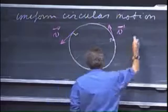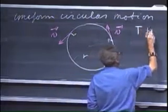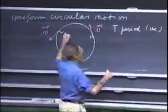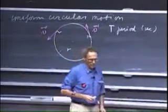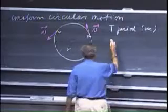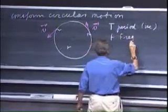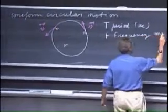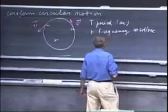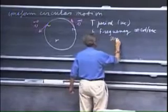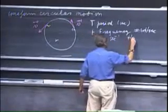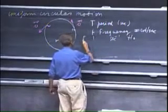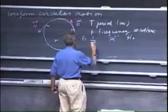We introduce T, what we call the period. Of course, it's in seconds, which is the time to go around once. We introduce the frequency f, which is the number of rotations per second. And so the units are either second minus one, or as most physicists would call it, hertz. So frequency is one divided by T.